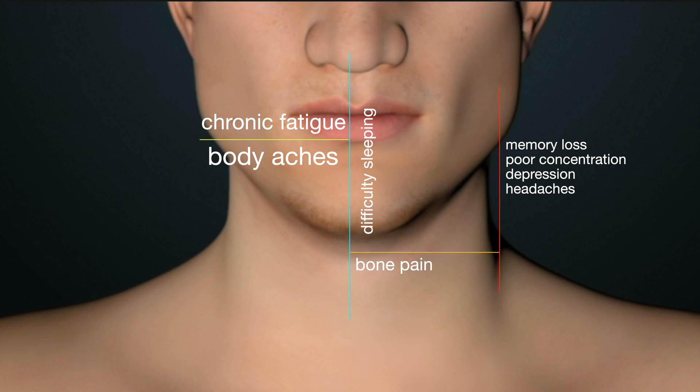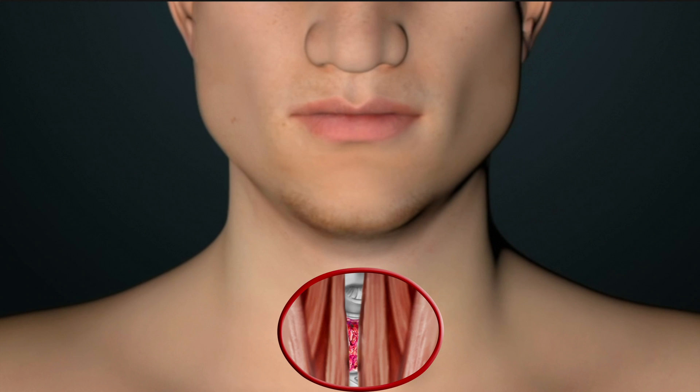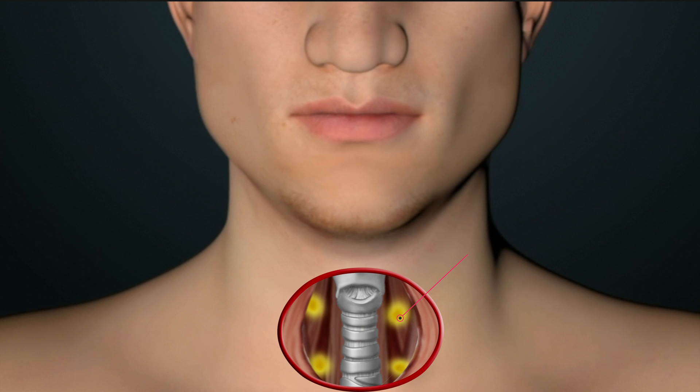Once the patient is under general anesthesia, the incision is made in the lower part of the neck. Muscles overlying the thyroid gland are retracted to the sides. The four tiny parathyroid glands, two on each side, are usually found behind the thyroid gland.